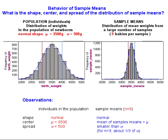So let's summarize our observations. When we are comparing individuals in the population to sample means, we assumed that individual birth weights were normally distributed with a mean of 3,500 grams and a standard deviation of 500. Now how does that compare to what happened when we collected thousands of samples and looked at the distribution of sample means?